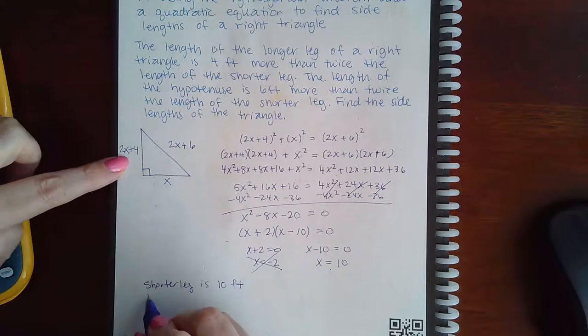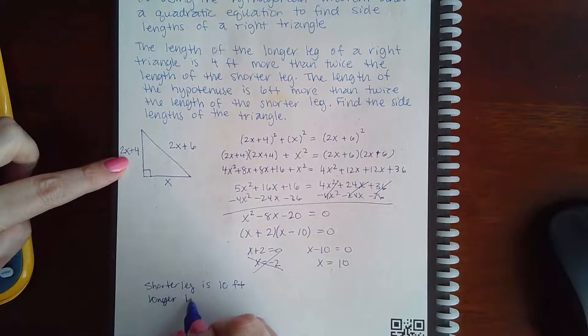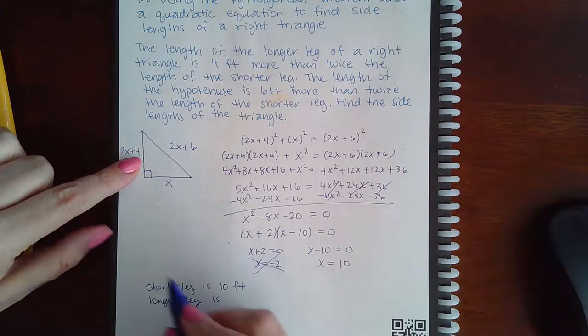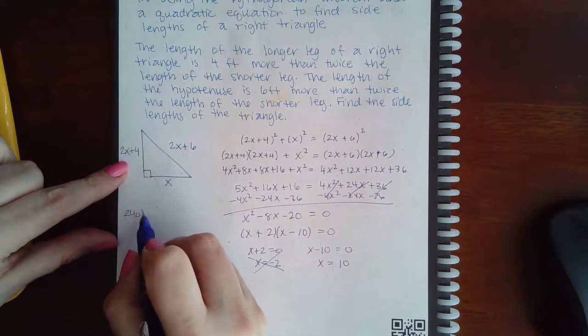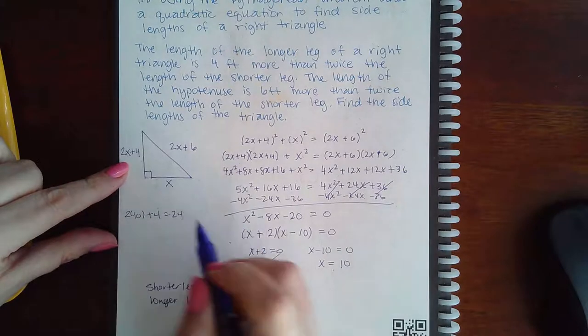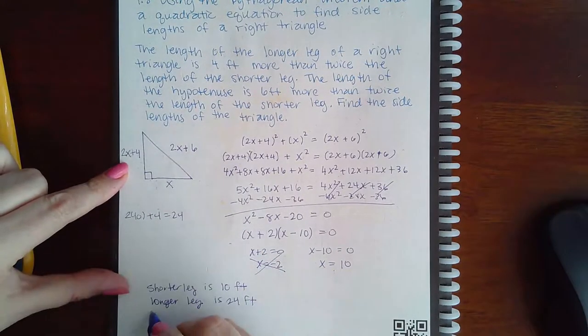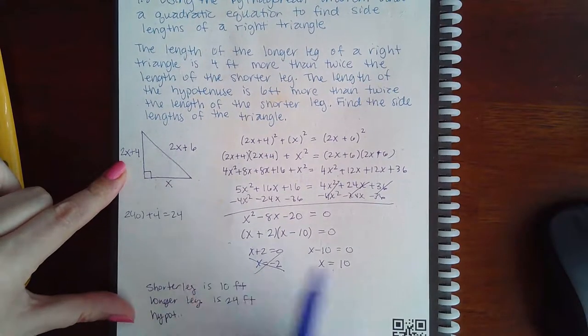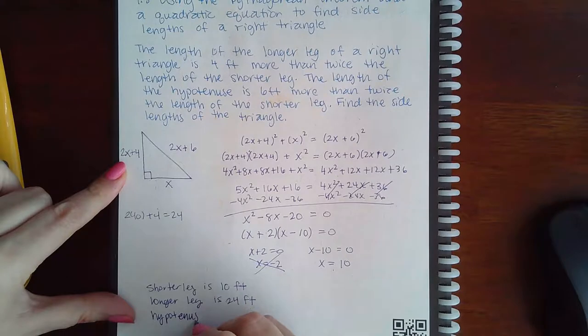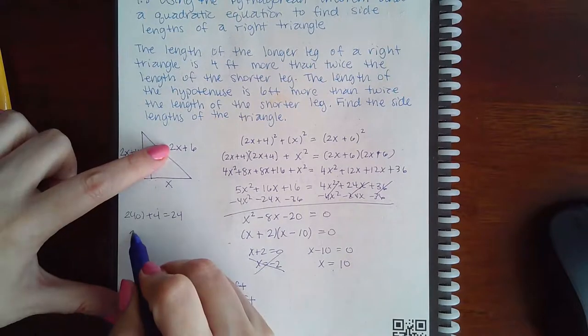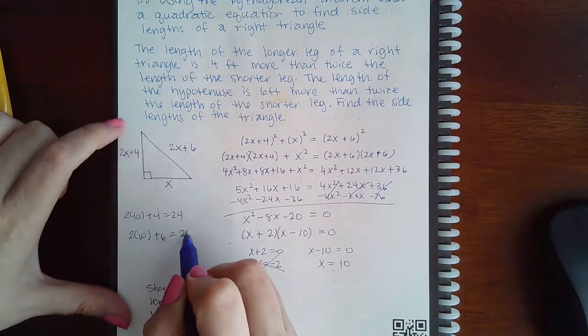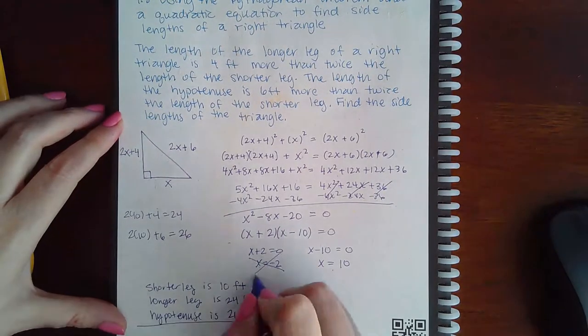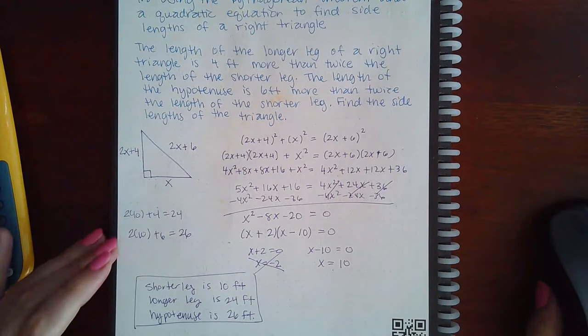Then if I want to find the length of the longer leg, I need to do 2 times 10 plus 4. What is 2 times 10 plus 4? That's 24. So this would be 24 feet. And then we also know that the hypotenuse is going to be 2 times 10 plus 6, which is 26 feet. Now we have the measurement of all three sides of the triangle.